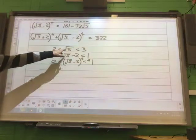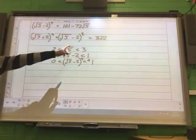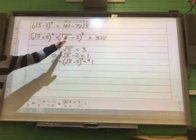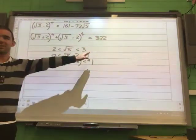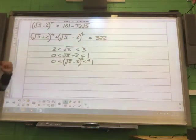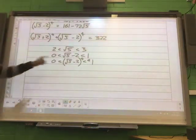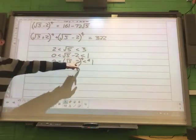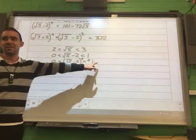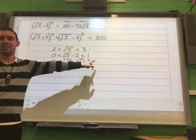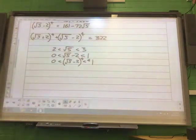So if root 5 is between 2 and 3, and then I'll take away 2 from each of those three terms, therefore root 5 take away 2 must be between 0 and 1. And then if I put everything to the power of 4, root 5 take away 2 to the power of 4 must be between 0 and 1.